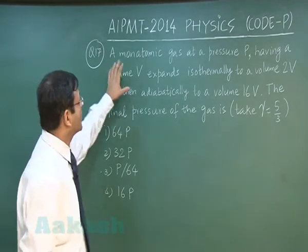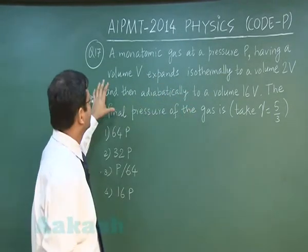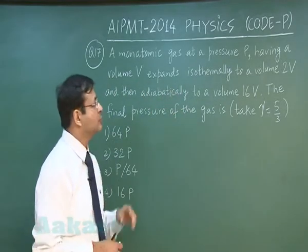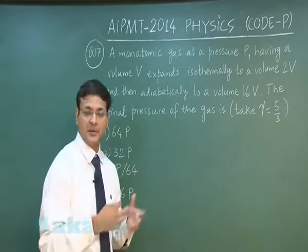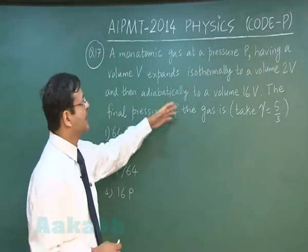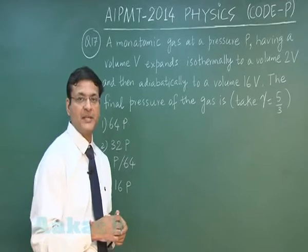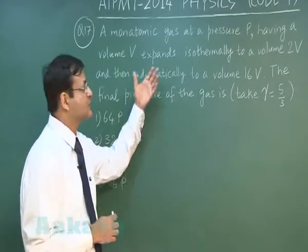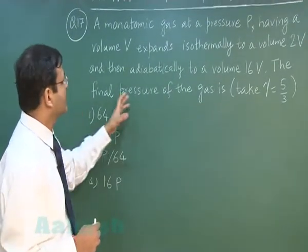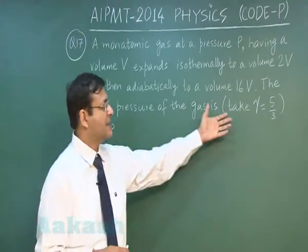In question 17, a monatomic gas at pressure p with volume v expands isothermally to volume 2v, and then adiabatically to volume 16v. This is a two-step expansion in thermodynamics and you have to find the final pressure of the gas, taking gamma as 5/3.